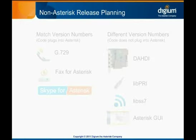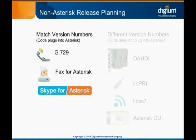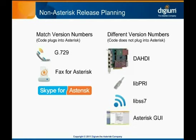Throughout this course we'll mention several other software packages provided by Digium for use with Asterisk. Some of these use the same numbering system that Asterisk does, and the package release family must match that of the Asterisk version with which it's being used. Others use independent version numbers and won't have matching numbers. Code that plugs directly into Asterisk as an internal module will require that the version numbers match — examples of this are codec G.729, Fax for Asterisk, and Skype for Asterisk. Code that is a separate package and does not plug directly into Asterisk is more likely to have its own version numbers — examples are DAHDI, libpri, libss7, and the Asterisk GUI. Note that the Asterisk add-ons collection of code was a separate package prior to the 1.8 release series, but now is natively included in Asterisk.